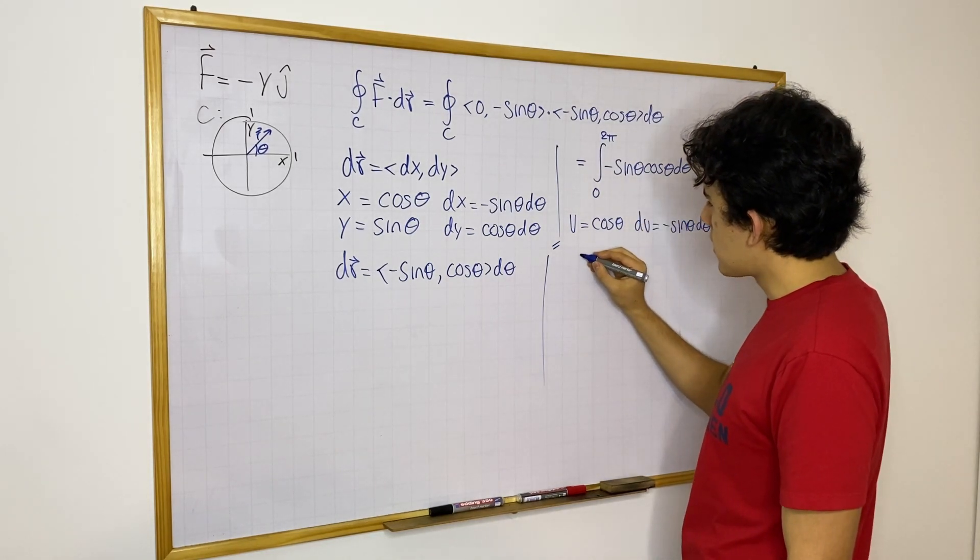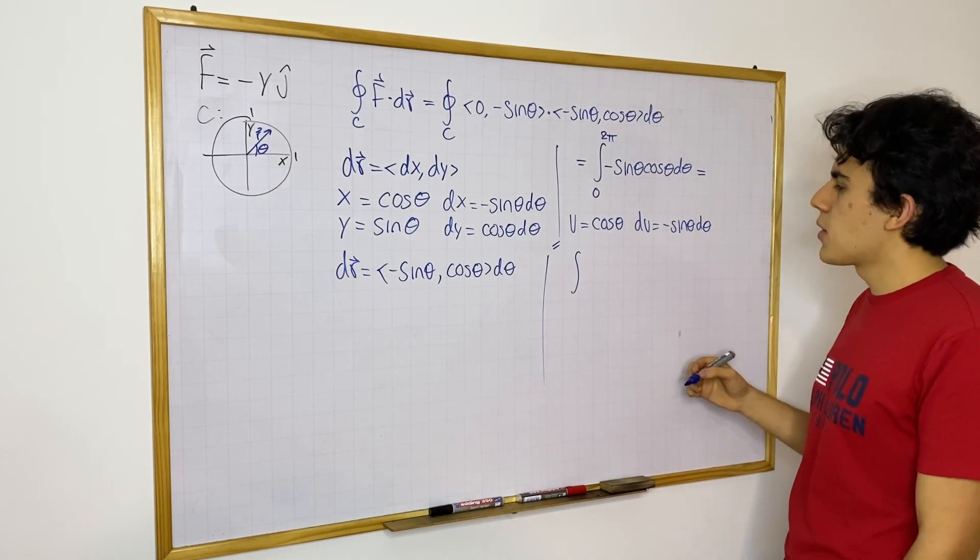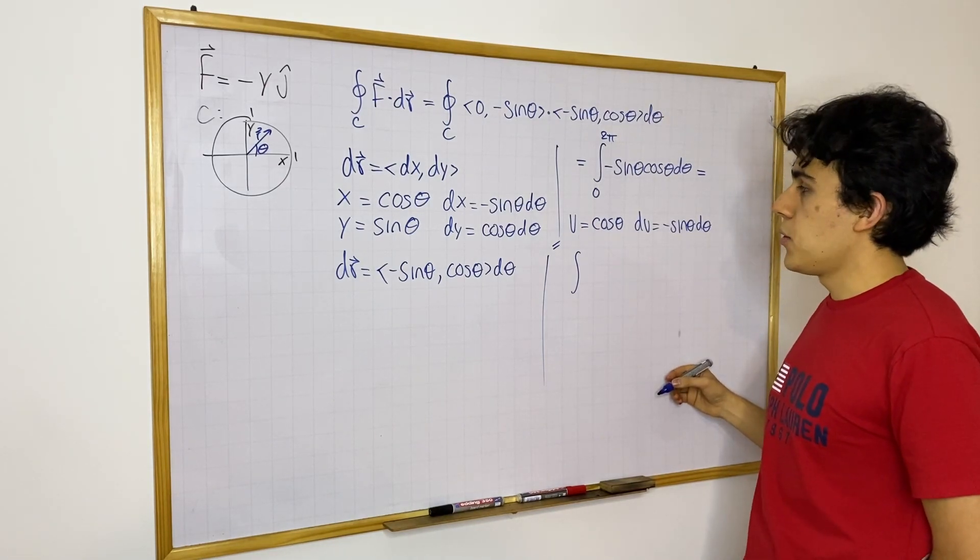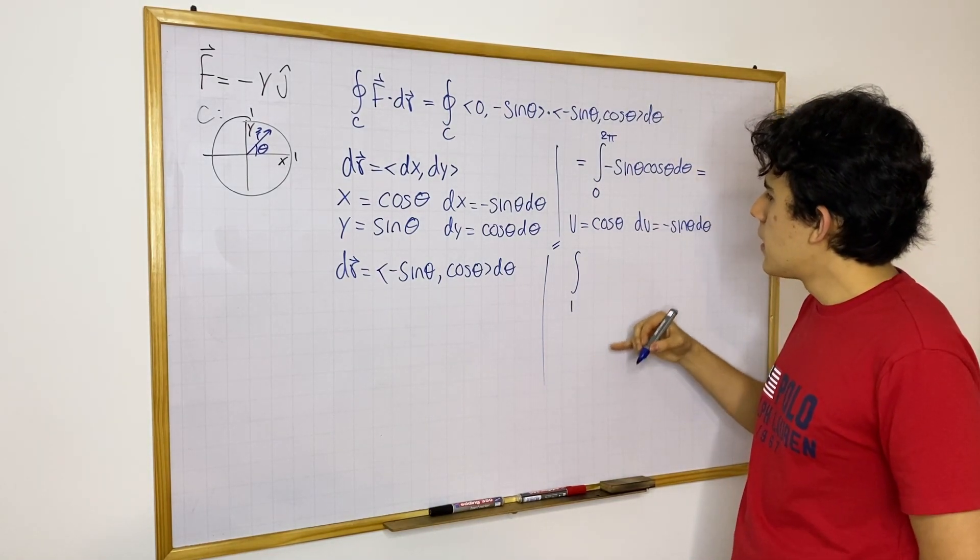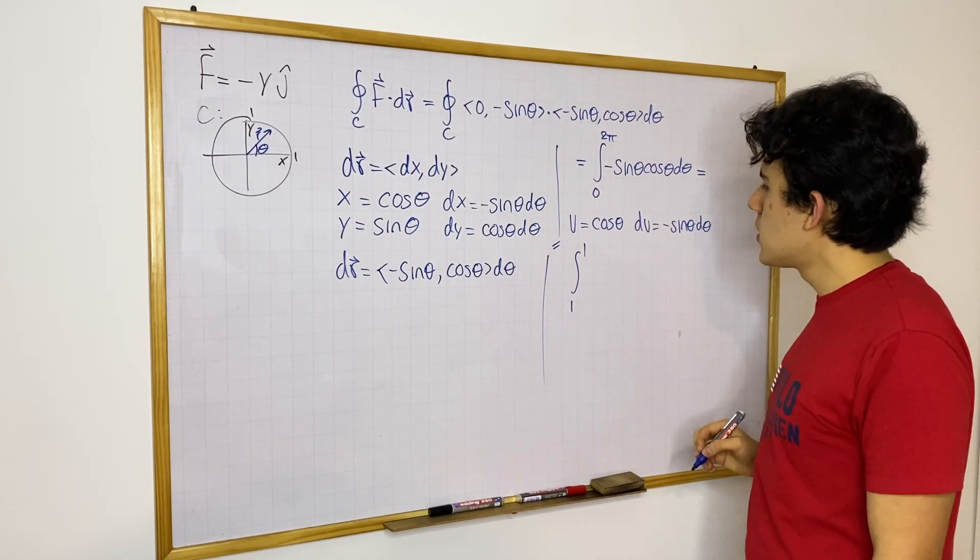And then this integral becomes cosine theta. I'm going to change the bounds right away. Cosine theta, if I leave it at zero, that will be one. And then cosine theta and cosine of two pi. Well, it's also going to be equal to one.